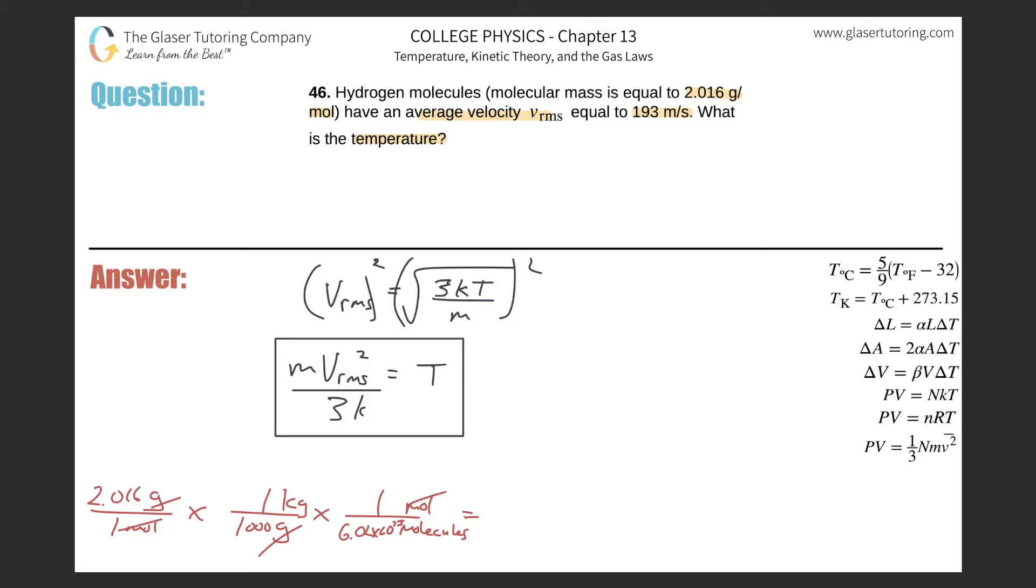So 3.35 times 10 raised to the minus 27th, and that is going to be kilogram per molecule. And that's what we needed.